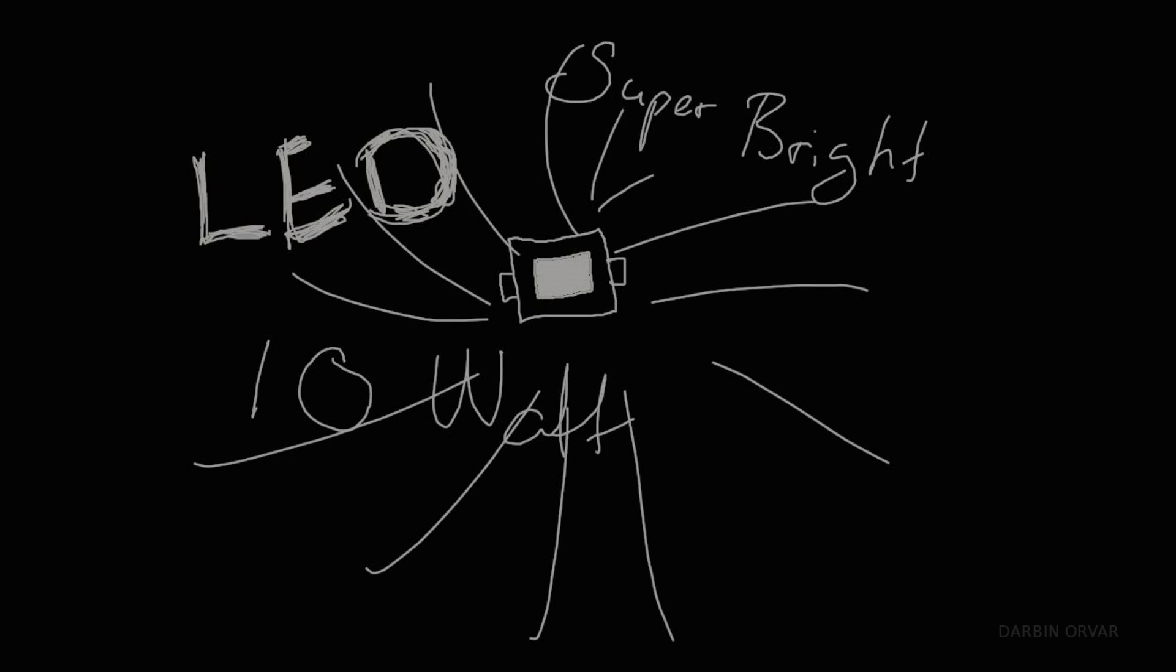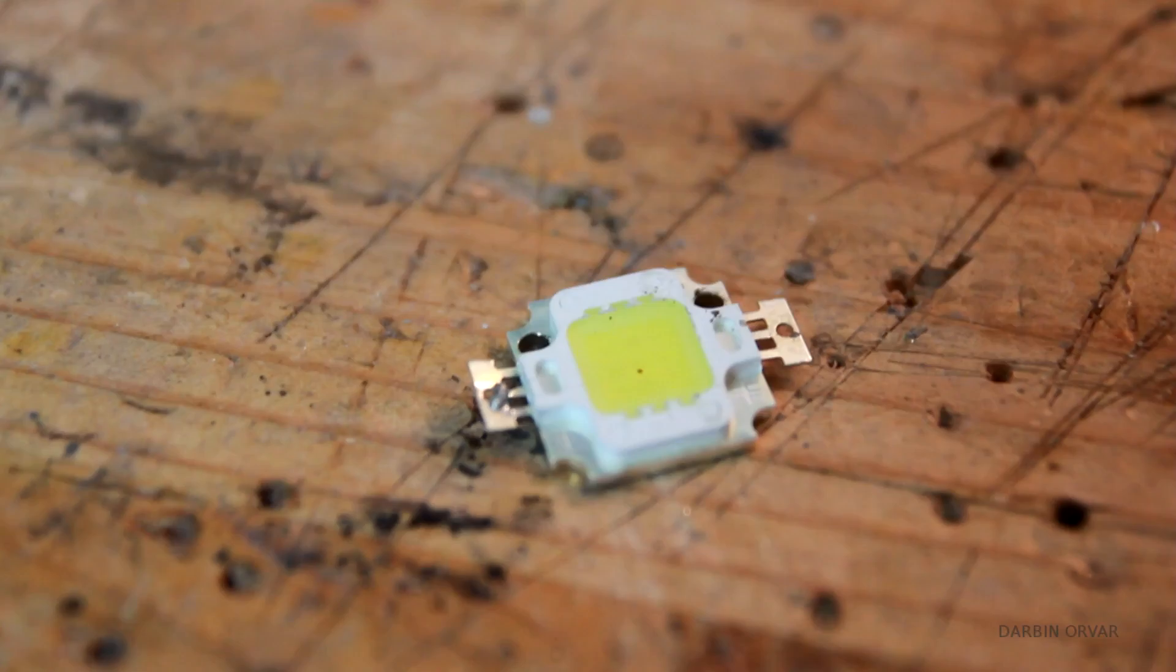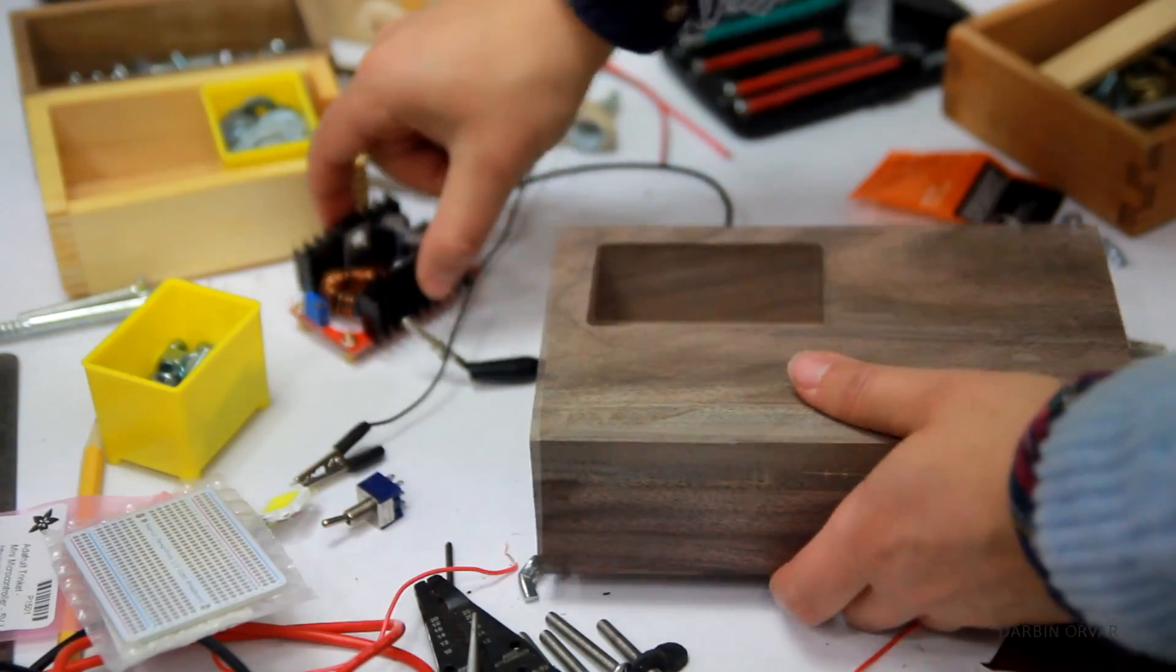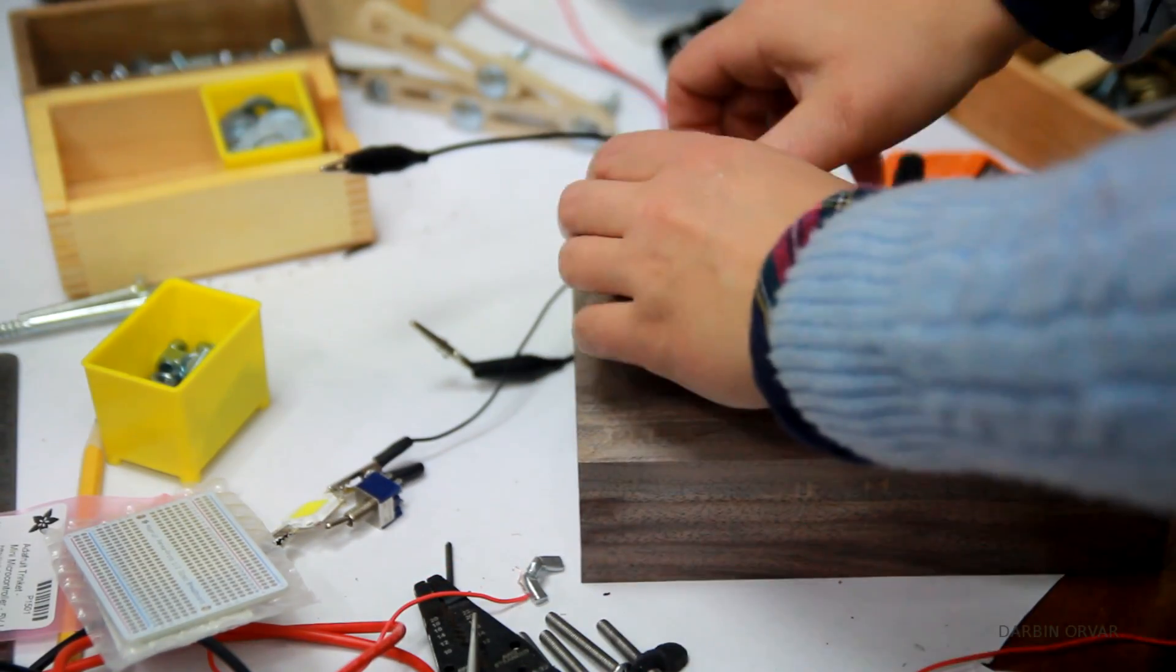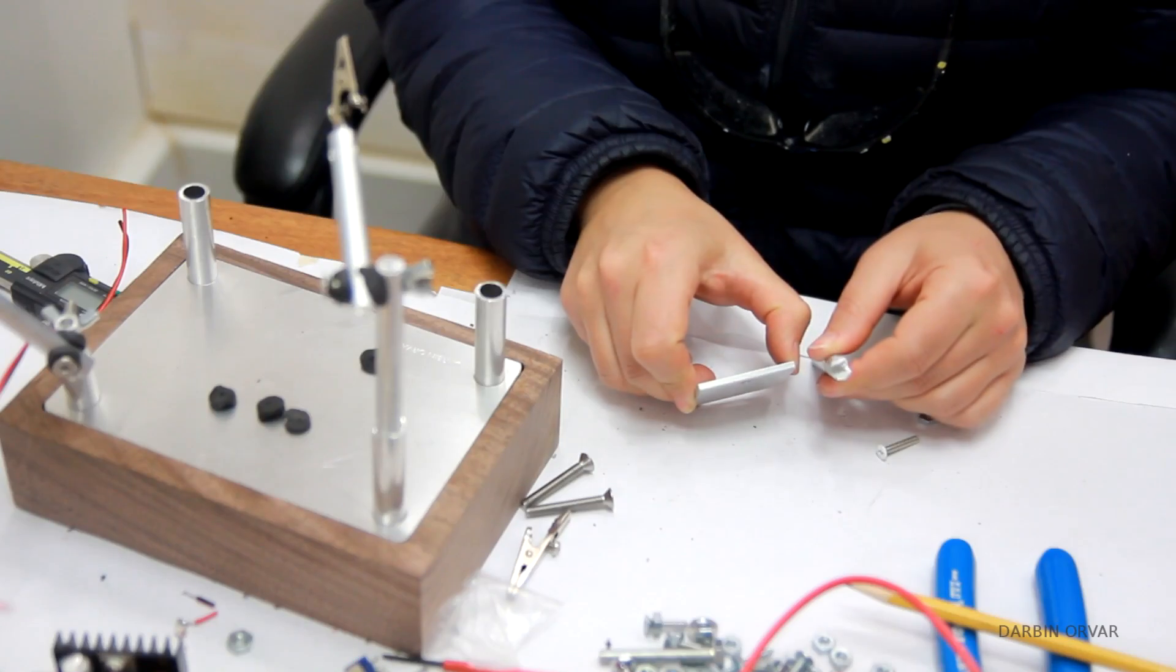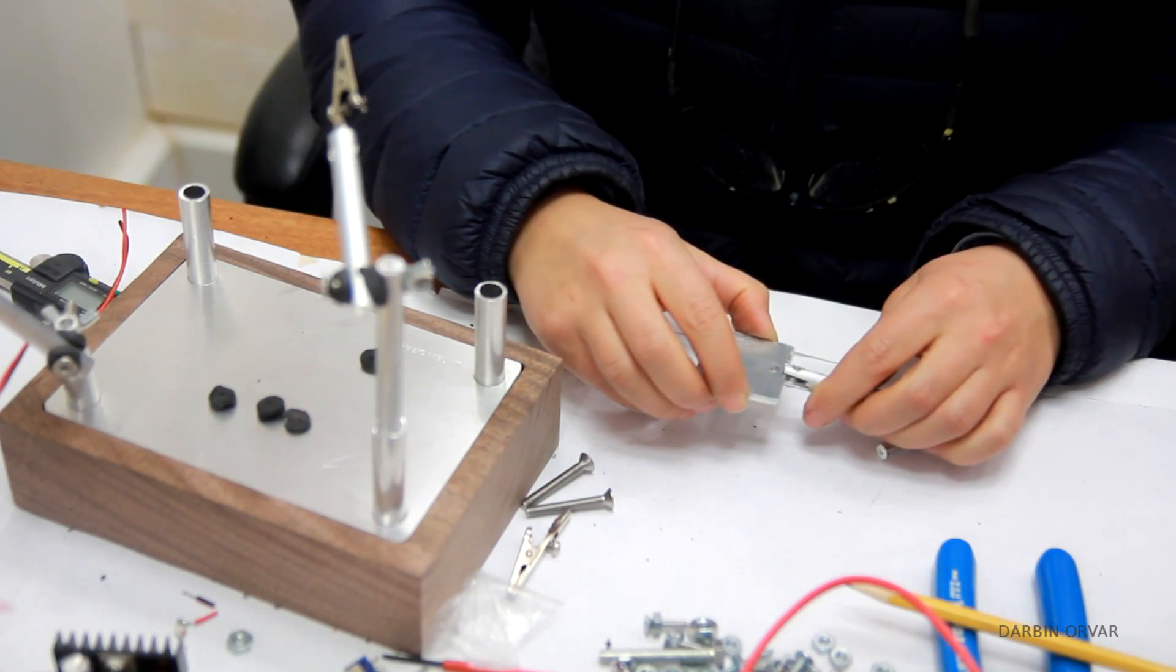So for the light I'm going to be using a super bright 10 watt LED. I'm going to attach it to a piece of aluminum. 10 watt LEDs require 30 volts so I'm going to need a booster to up the voltage.